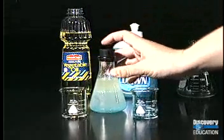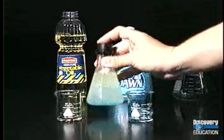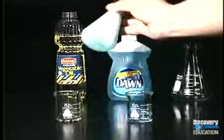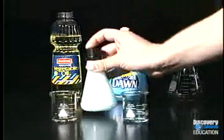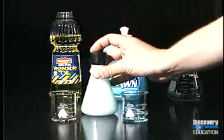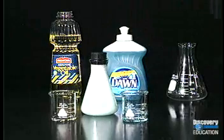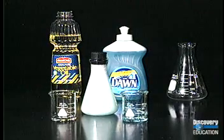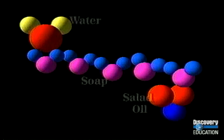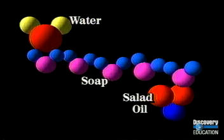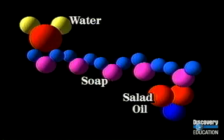An emulsion is a colloid created by the dispersion of one liquid in another. In this example, soap is used as an emulsifying agent to combine the salad oil and water. Soap molecules are large, and one end dissolves into the salad oil while the other end dissolves in the water, thus bringing the two together.